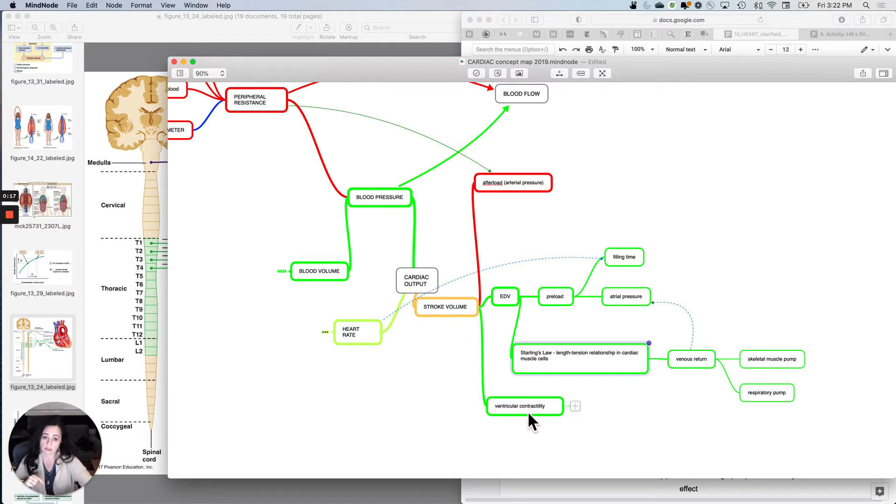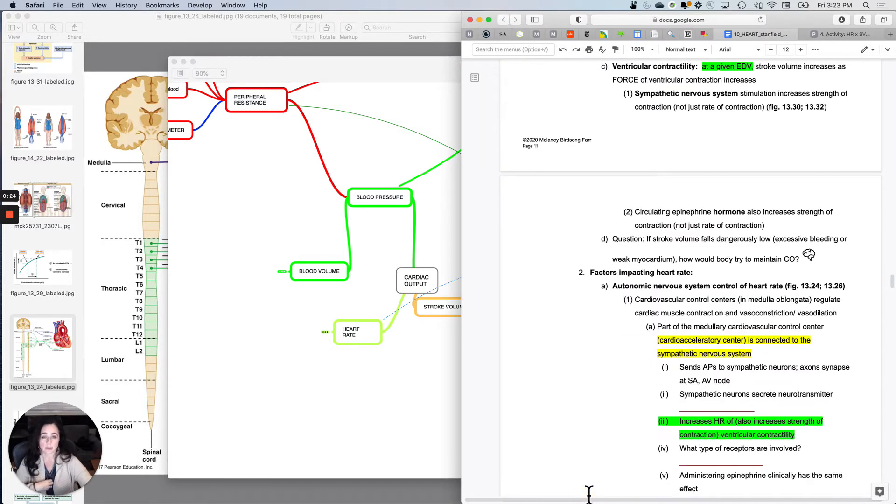This is called ventricular contractility. Listen carefully to what's going on here. With ventricular contractility, what you are going to do is keep the volume in the ventricles constant, but then you're going to make the ventricle contract harder. This is not the same thing as Starling's Law. So let me show you a couple things and watch this.